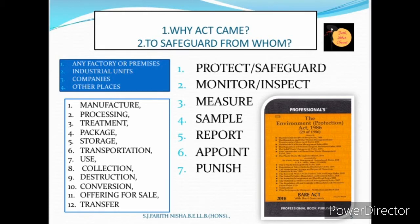The act provides a lot of sections to deal with industries that are polluting excessively. This pollution actually comes from manufacturing of goods, processing, packaging, storing, transport, or any unexpected situations like accidents.